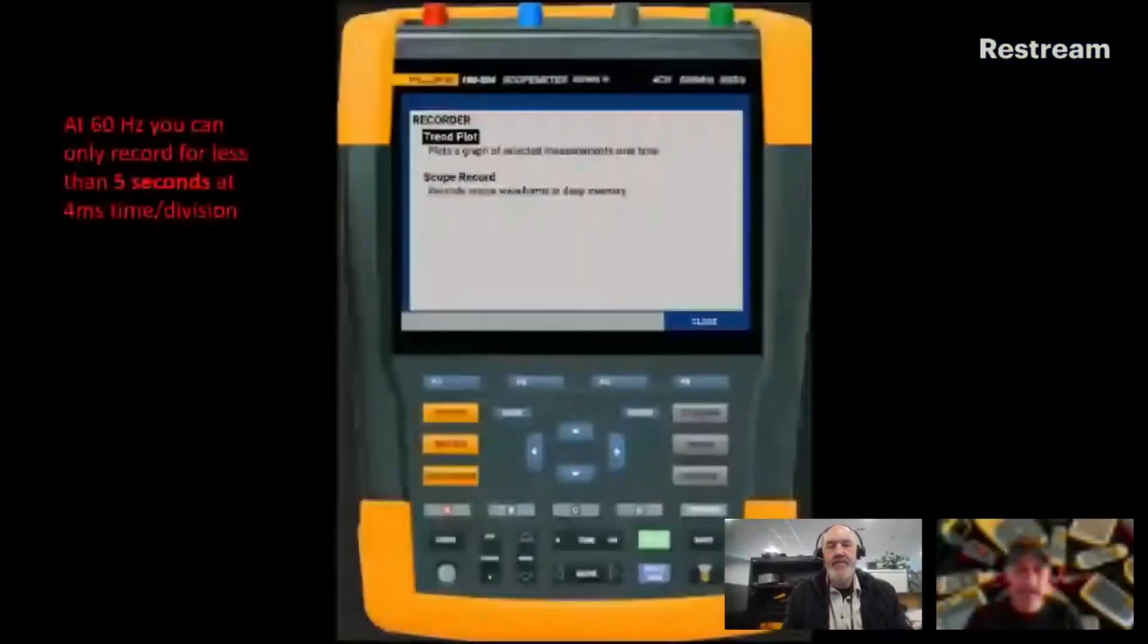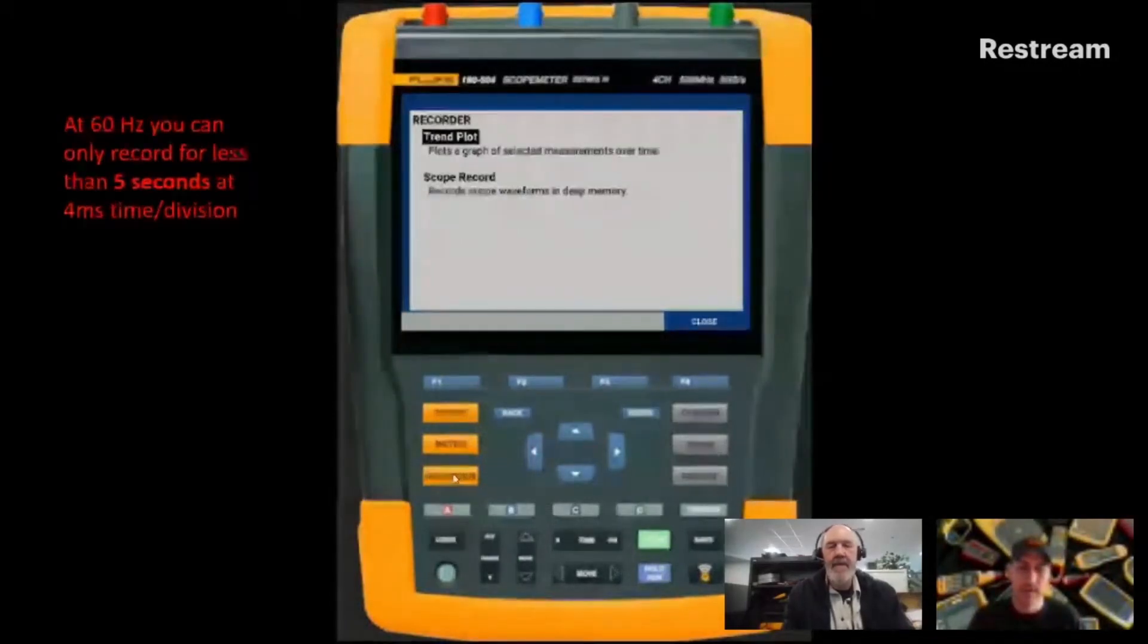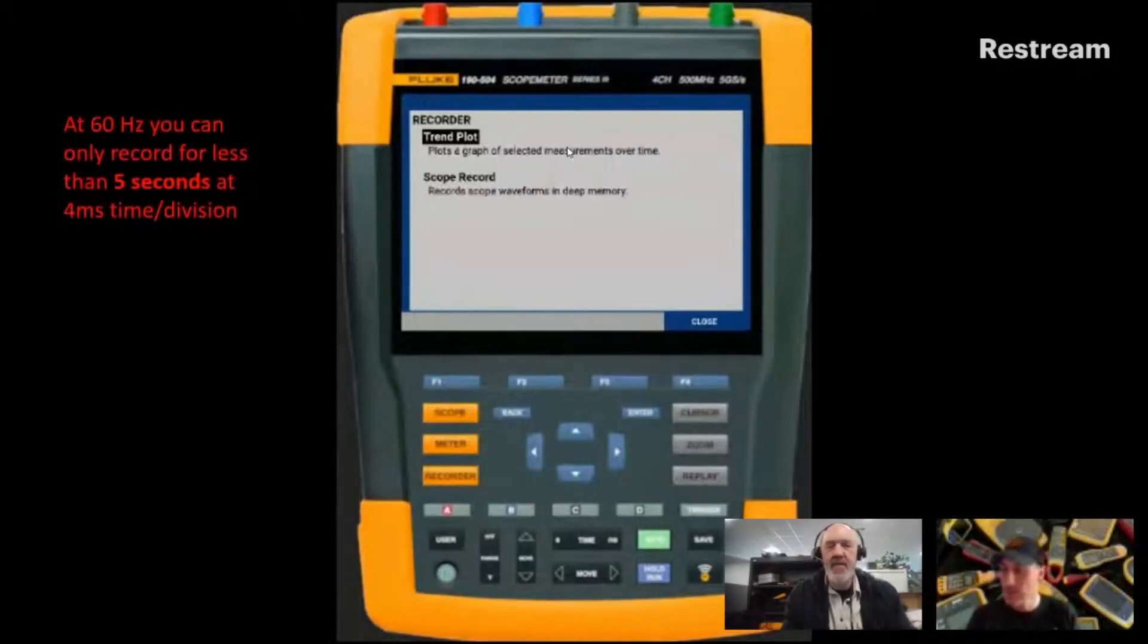All right, so what we're going to do is share the screen. These are some screen captures that we did earlier. With a scope meter, when we talk to customers, they want to record. If you click the record button, this guy right here, it's going to give you two options: trend plot or scope record. Trend plot, think of that as a chart recorder. It's just going to give you the RMS value over time. You can do trend plot for a very long time, about two weeks, at five readings per second.